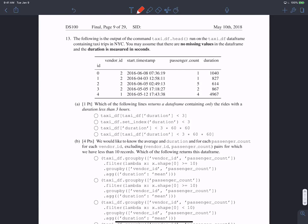Now in question 13, we're given the taxi_df data frame containing taxi trips in New York City. We can assume there are no missing values and that duration is measured in seconds, which will end up being important.